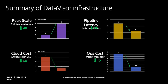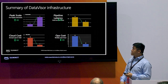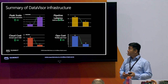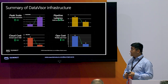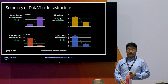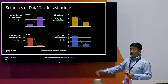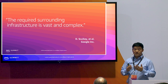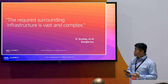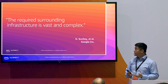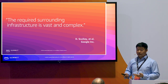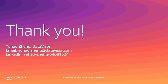To summarize our DataVisor Spark infrastructure system: it managed to increase peak scale by four times while reducing pipeline latency by 50%, saved cloud cost by five times compared with the naive on-demand approach, and also saved significant operational cost. I'd like to end with a quote from the Google paper: to serve a machine learning platform in production, the required surrounding infrastructure is vast and complex. We'd like to thank Amazon for building the reliable and scalable platform to make all of this happen. That's all I have for my talk — you're welcome to connect with me offline. Thank you.